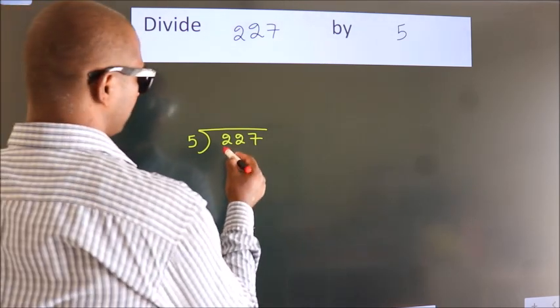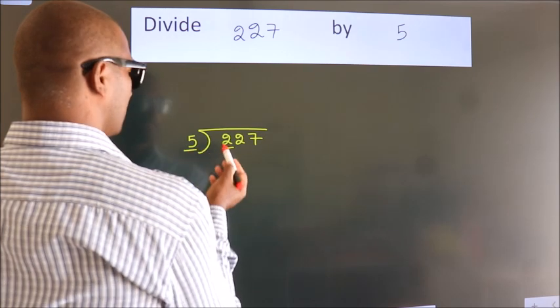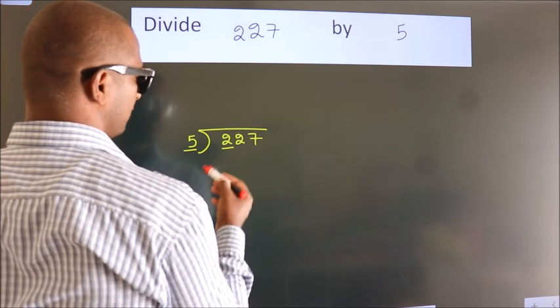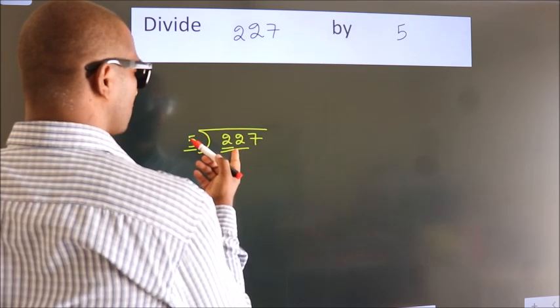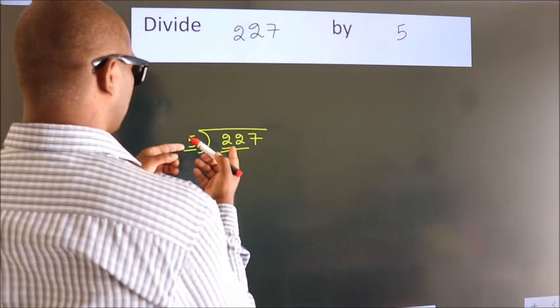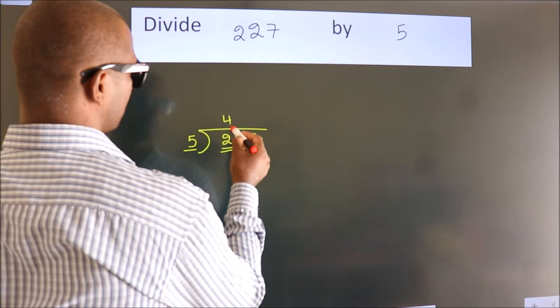Here we have 2. Here 5. 2 is smaller than 5, so we should take 2 numbers: 22. A number close to 22 in the 5 table is 5 times 4, 20.